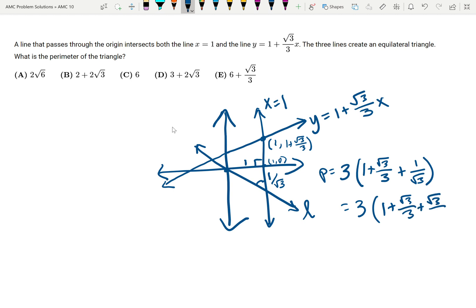So then we have 3 times (1 plus 2 root 3 over 3), so we get 3 plus 2 times the root 3. The answer is D.